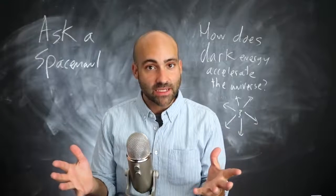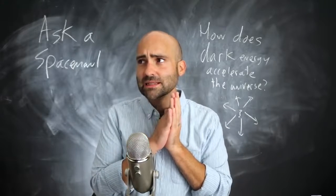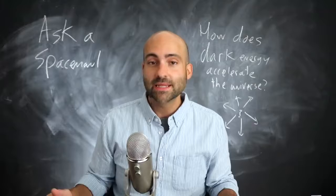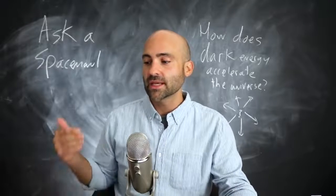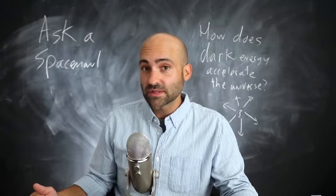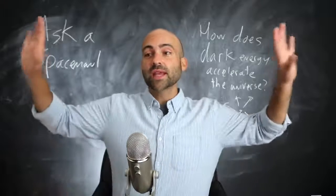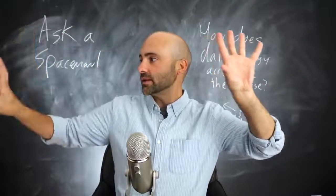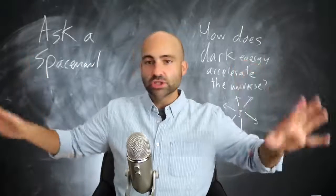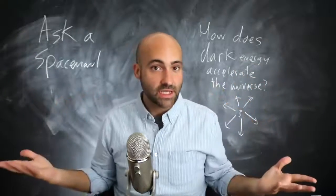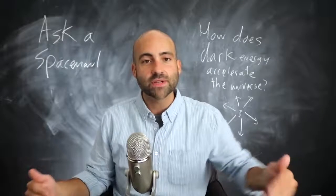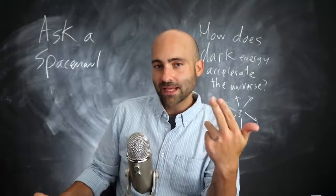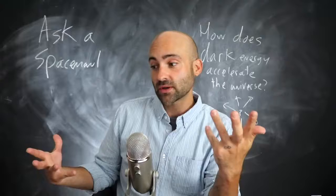He found that the universe had a natural preferred state — that it was in motion, either expanding or contracting. This did not make Einstein happy, because in the 1910s when he was developing all this, as far as we knew the universe was static. Stars would move around relatively slowly in apparently random directions, but there was no general expansion or contraction. We didn't even know at the time that other galaxies existed.